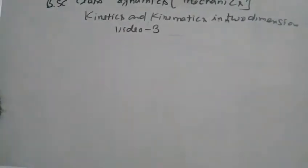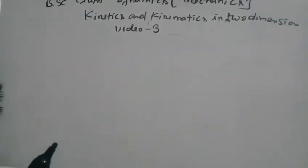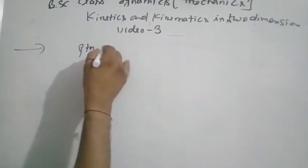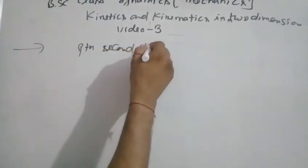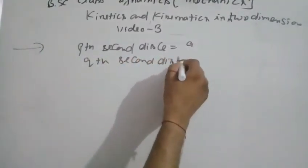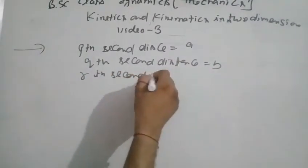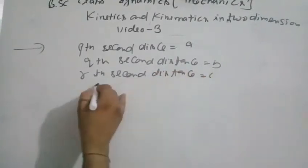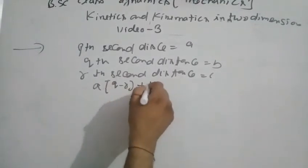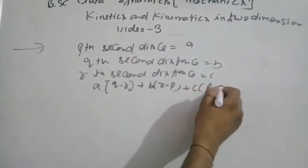Now a numerical problem: If the distances described by a particle during the pth, qth, and rth seconds of motion are a, b, and c respectively, prove that a(q minus r) plus b(r minus p) plus c(p minus q) equals zero.